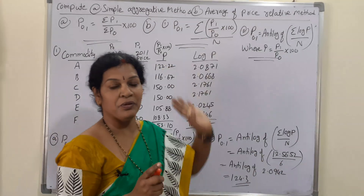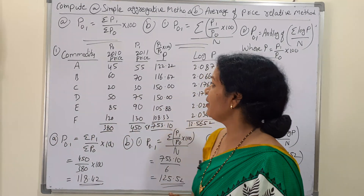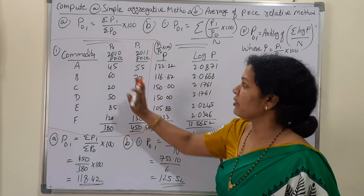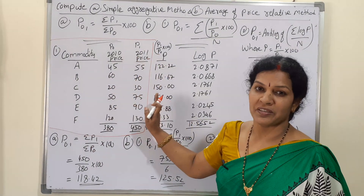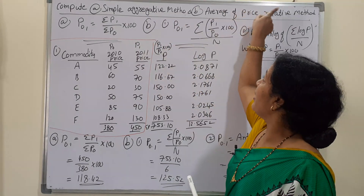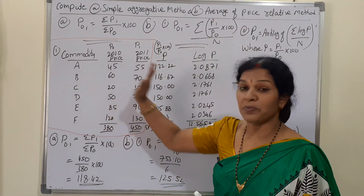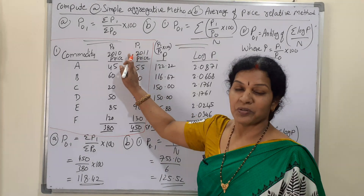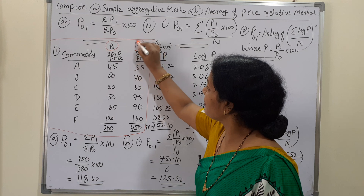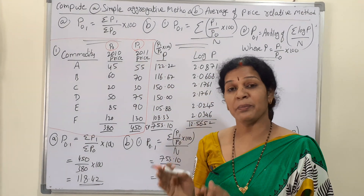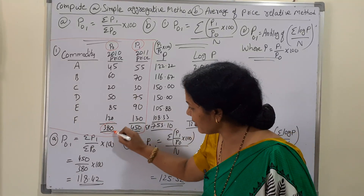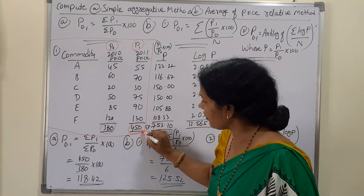Now I'm taking a simple problem for clarity. The problem gives us commodity prices for 2010 and 2011. We have to identify P₀ and P₁: the 2010 price is P₀ (base year) and the 2011 price is P₁. After totaling, ΣP₀ = 380 and ΣP₁ = 450.